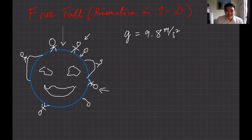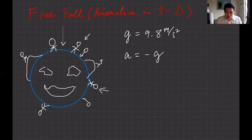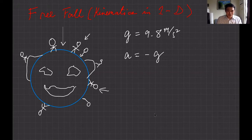Now if you use this value in an equation, you have to use negative g, because g is just a magnitude — we don't include the negative sign on its own, but we know it's going downward. If you use it in an equation, you have to put the negative sign because it's always going downward. So you put negative g.